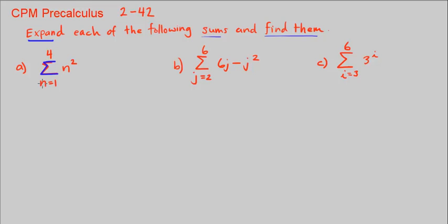This is sigma. Here n equals 1 is our start. 4 on top is our stop. And n squared is our expression. So what we do is we start with n is equal to 1, plug it into the expression. So when we plug that into our expression we get 1 squared. Because n is 1 and we just plug it in and we get n squared.